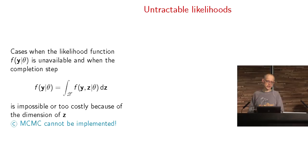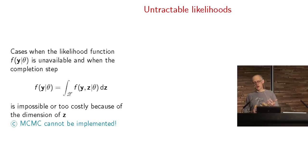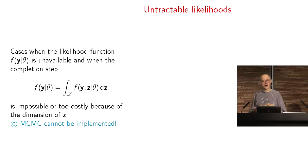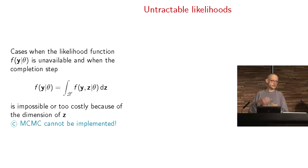Often you can rephrase an intractable likelihood as a missing variable problem. But if you think of a Markov random field, there is a normalizing constant that is not well approximated and not computable in most situations. So there are cases where MCMC cannot be implemented—even with a lot of imagination and perseverance, MCMC may fail. The same thing applies to importance sampling, which is why the clever proposal of Donnelly and Stephens didn't go very far in the community because it couldn't handle complex models.